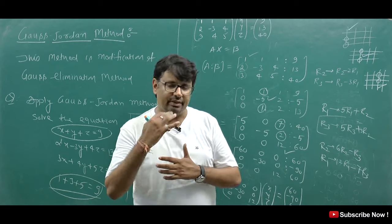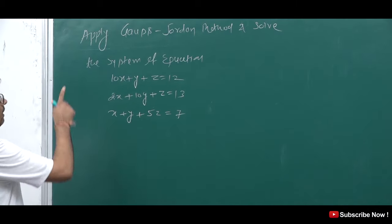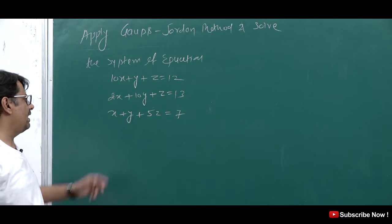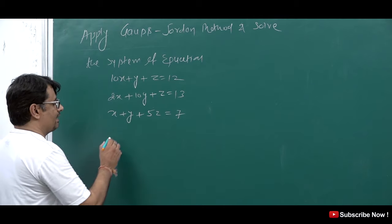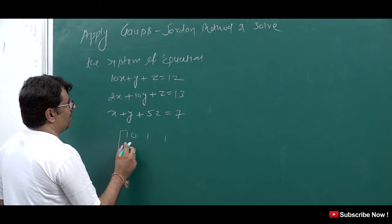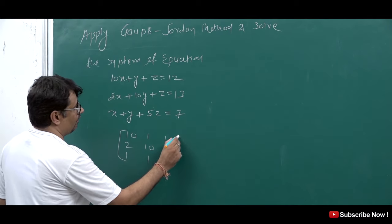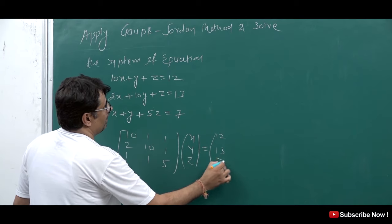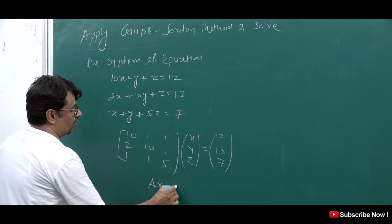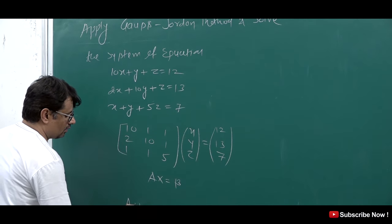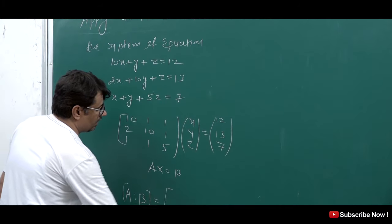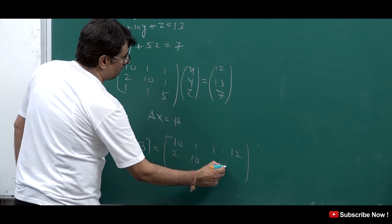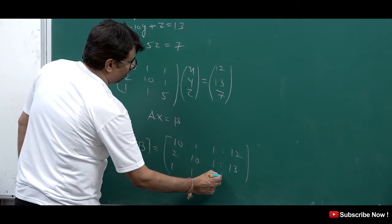Now let's take one more question. Apply the Gauss-Jordan Method to solve the system: 10x plus y plus z is equal to 12; 2x plus 10y plus z is equal to 13; and x plus y plus 5z is equal to 7. We write it in matrix form and then as AX = B and form the augmented matrix A|B with rows [10,1,1|12], [2,10,1|13], [1,1,5|7].